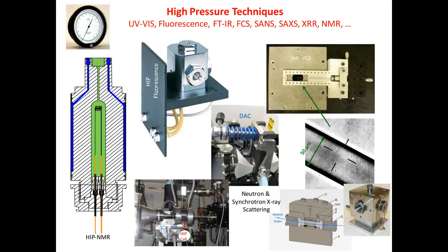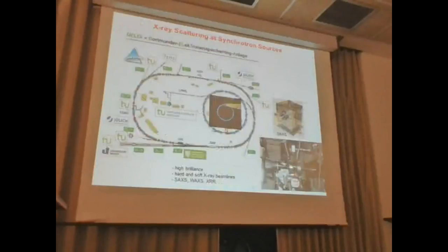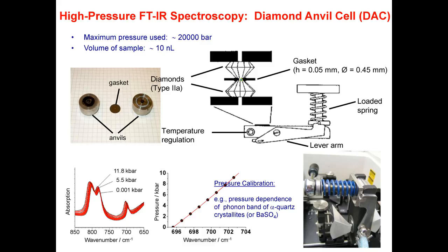For most of these techniques, pressure cells are available, but for about 80% of them you still have to build them yourself. NMR is now available commercially. We have built, for example, a high-pressure neutron reflectivity cell, a high-pressure small-angle scattering cell with flat diamond windows, a high-pressure fluorescence microscopy cell using a quartz capillary, and a high-pressure cell for synchrotron small-angle scattering with flat diamonds. We also use a diamond anvil cell for infrared spectroscopy, with barium sulfate or quartz as pressure calibrants, following the quartz phonon band as a function of pressure.